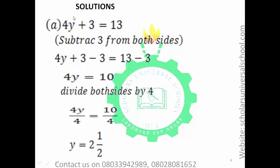What we perform on the left-hand side we also perform on the right-hand side. So we subtract 3 from both sides: 4y plus 3 minus 3 equals 13 minus 3. Plus 3 minus 3 gives zero, leaving 4y. 13 minus 3 is 10. Now we need y, not 4y — so we divide both sides by 4. 4 divided by 4 gives only y, and 10 divided by 4 is 2 and one-third.